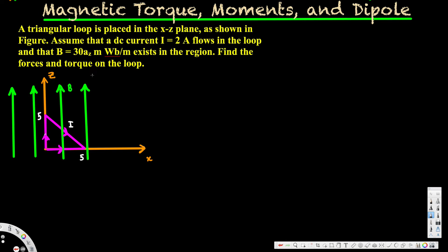Let's look at this problem. The question is asking: a triangular loop is placed in the xz plane as shown in the figure. Assume that a DC current i = 2 ampere flows in the loop and that B = 30az milliTesla per meter exists in the region. Find the forces and torque on the loop.